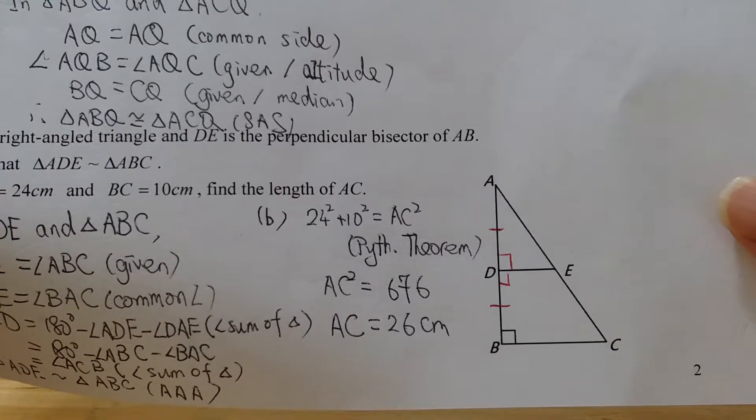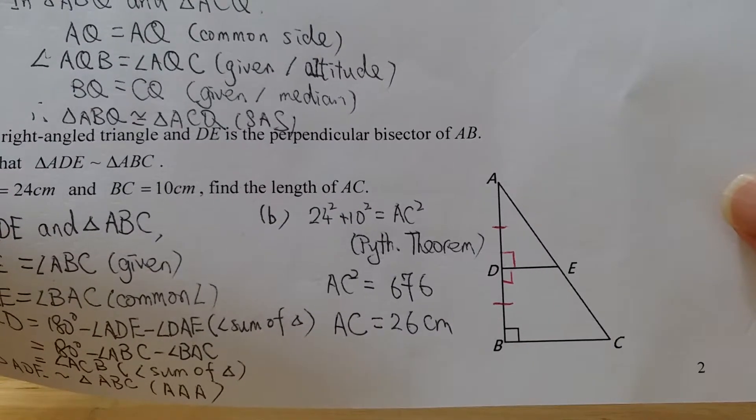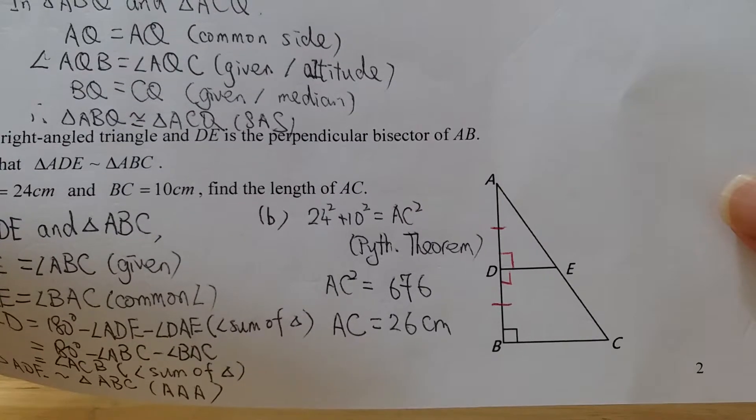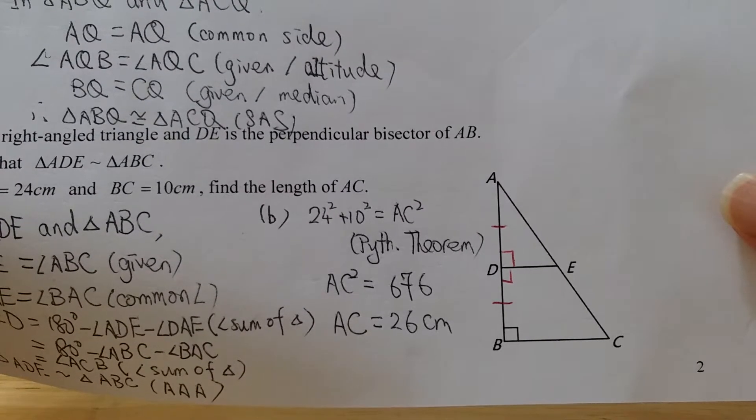And okay, now I found AC square equals 676, so we take square root and finally we know that AC will equal to 26.